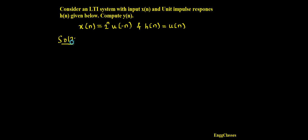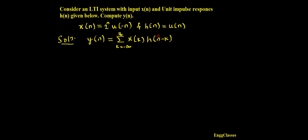First I need to write the formula for convolution, which is y of n equal to summation k equal to minus infinity till infinity of x of k times h of n minus k. I need to know what x of k and h of n minus k are. The given signals are in terms of n, so I just replace the variable n with k to get x of k and h of k.